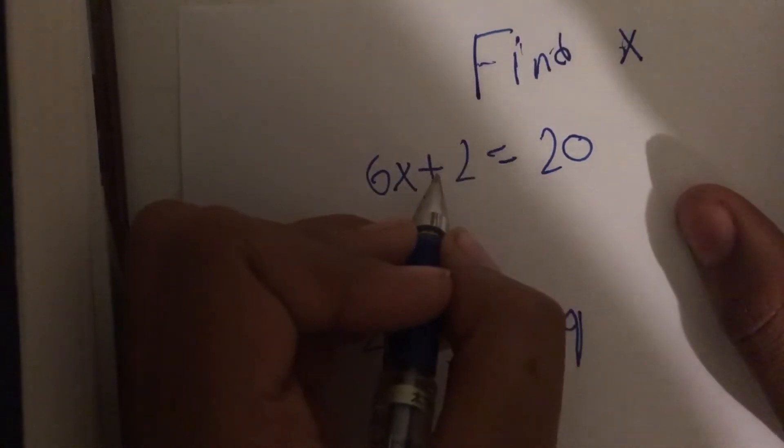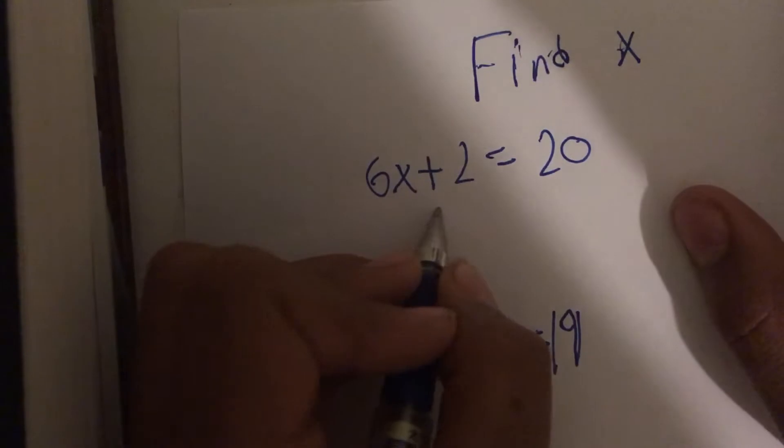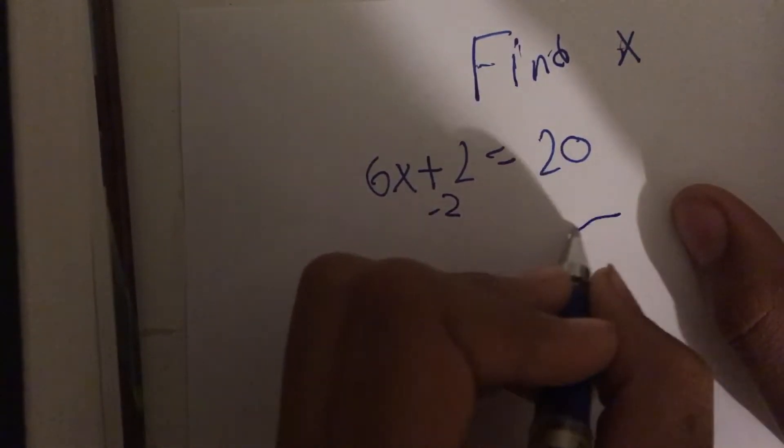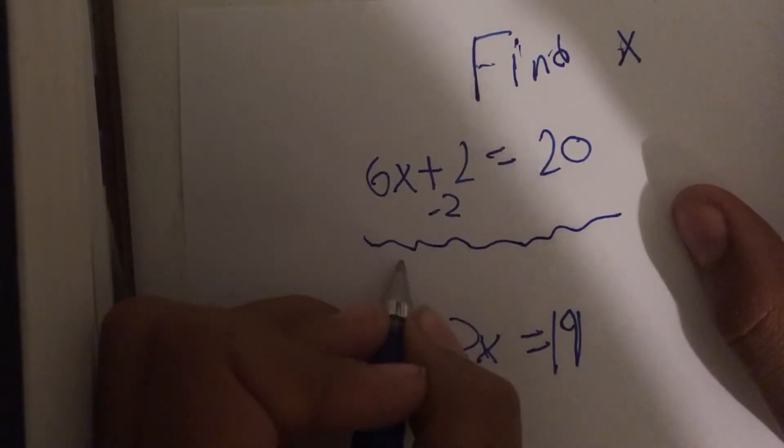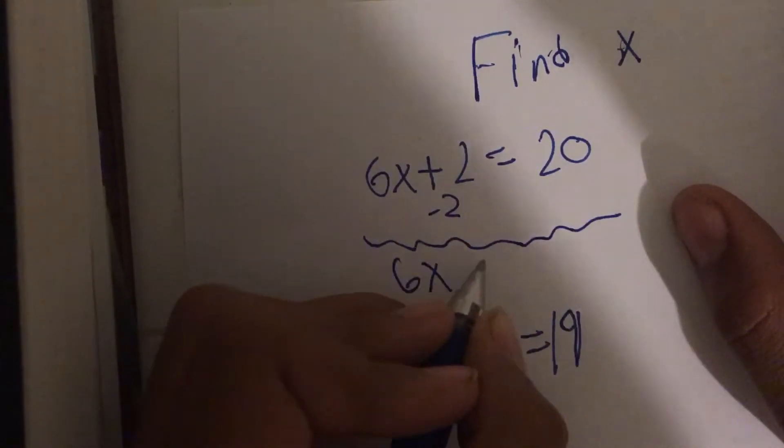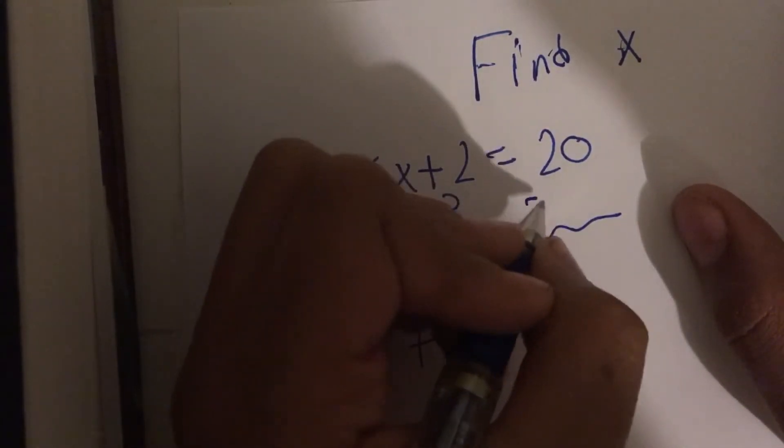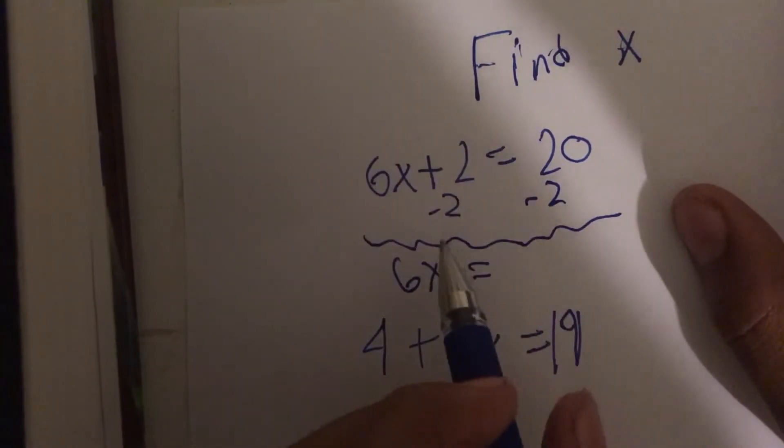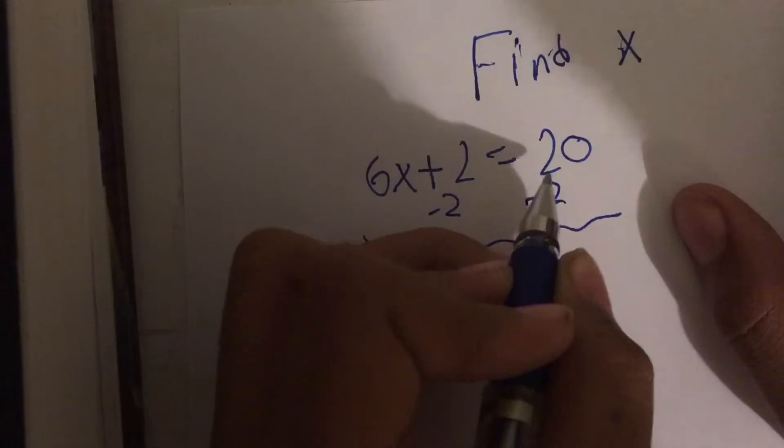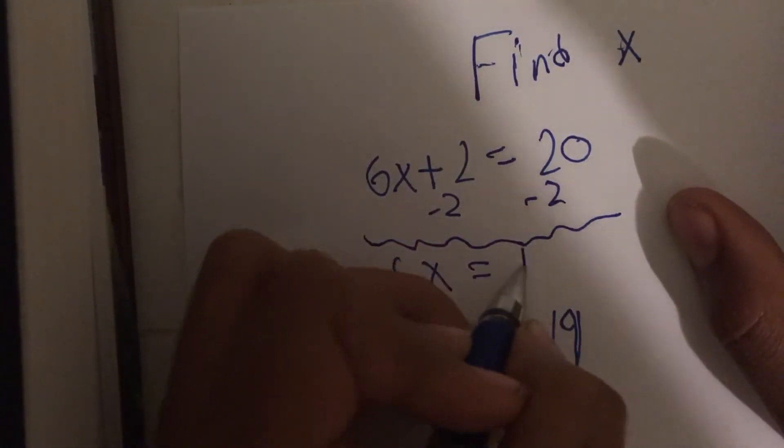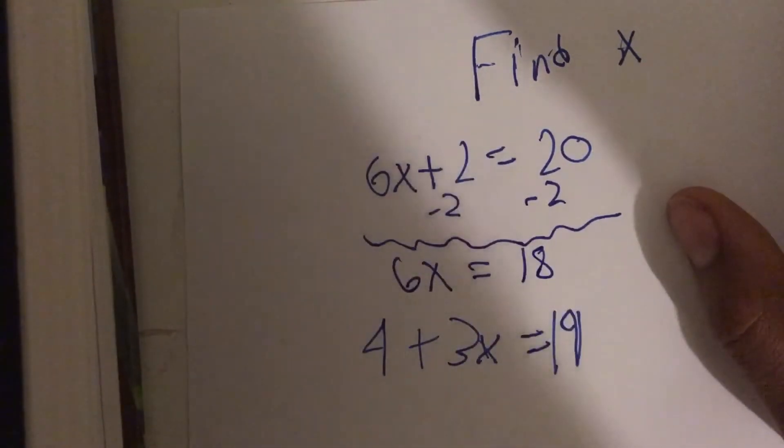What you're going to do, since it's getting added, you want to subtract 2, since it's positive 2, and then you're going to get 6x equals minus 2 from this side, because if you're subtracting a value, you have to do it on both sides. So, 20 minus 2 will equal 18.